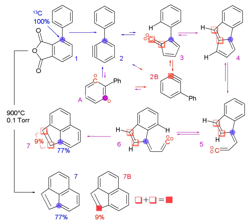The irreversible reactions provide the thermodynamic constraints needed to find the fluxes. A matrix is constructed that contains the stoichiometry of the reactions. The intracellular fluxes are estimated by using an iterative method in which simulated fluxes are plugged into the stoichiometric model. The simulated fluxes are displayed in a flux map, which shows the rate of reactants being converted to products for each reaction. In most flux maps, the thicker the arrow, the larger the flux value of the reaction.